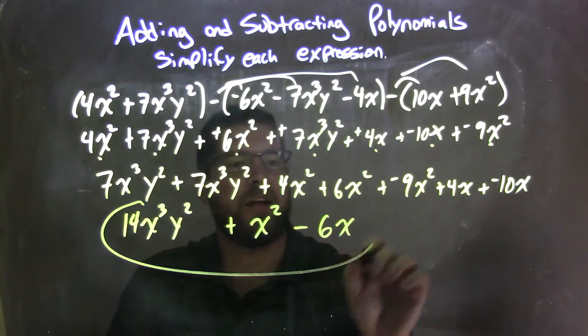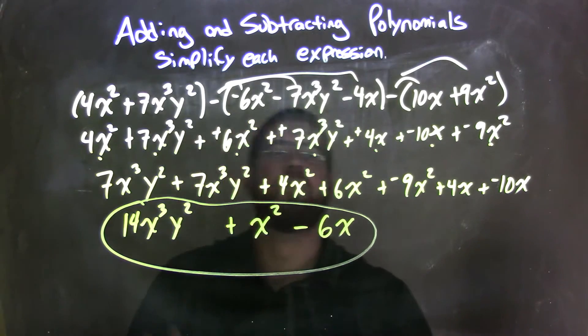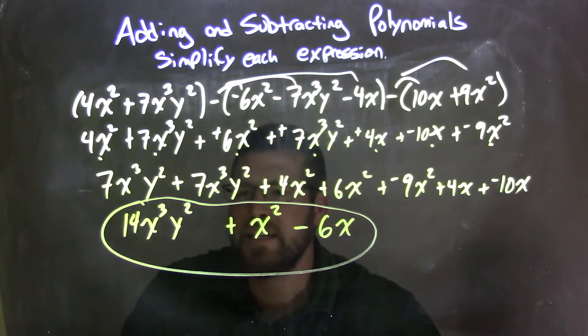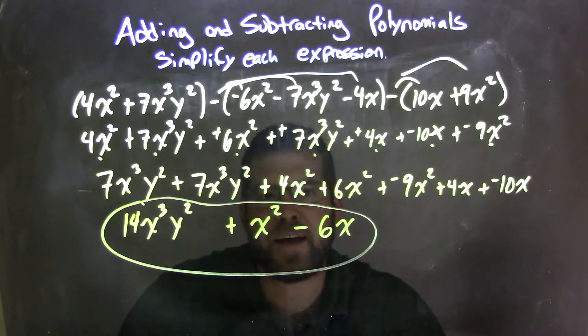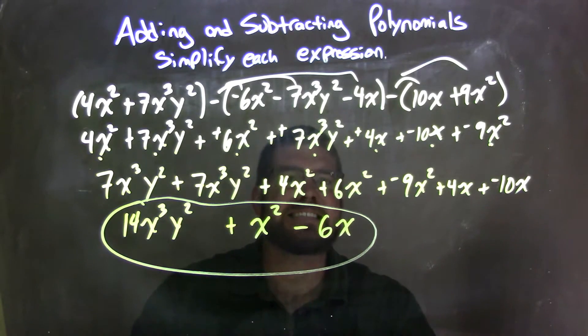And there we have our final answer, nice and neat. This whole crazy thing came down to be 14x to the third y squared plus x squared minus 6x.